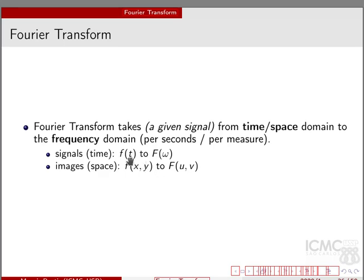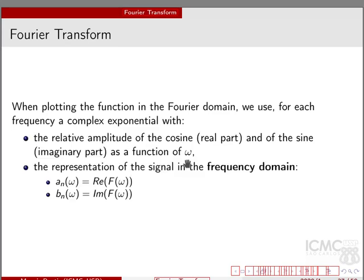The signals are written instead as capital F(omega). In the case of images, we take the image from the space domain — x and y coordinates — to capital F(u, v), where u and v are frequencies. When we plot the function in the Fourier domain, we use for each frequency a complex exponential with the relative amplitude of the cosine (real part) and of the sine (imaginary part) as a function of omega. Now the first axis is omega, not t or x anymore.